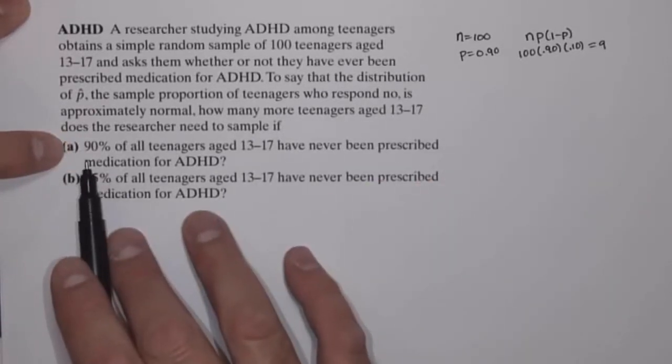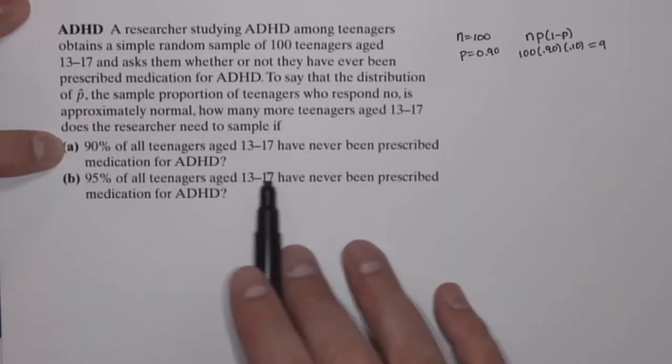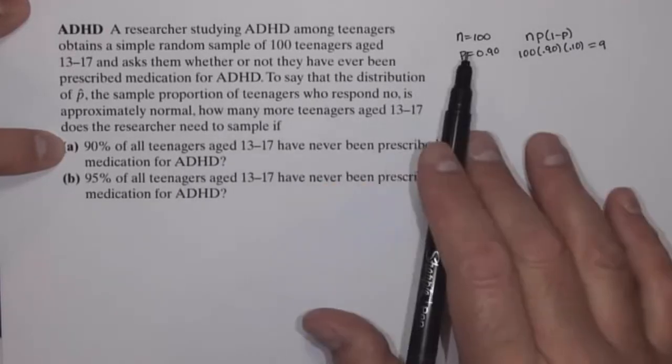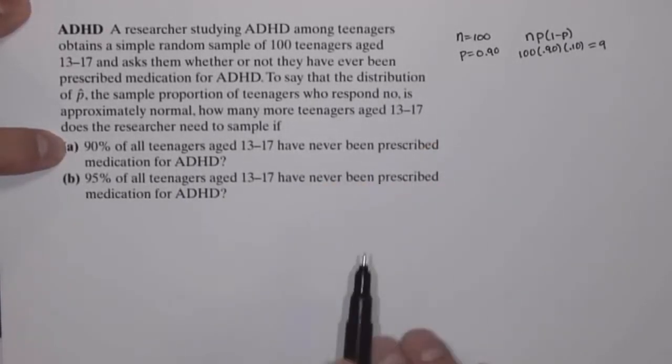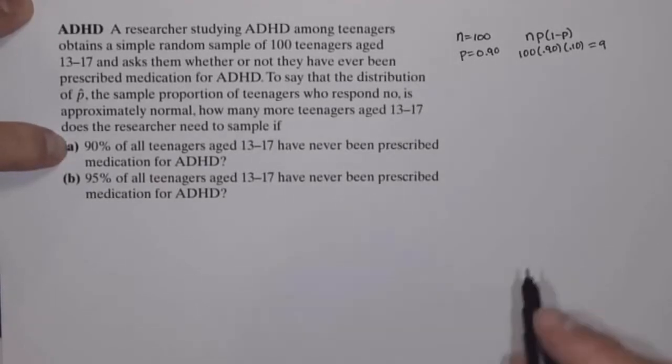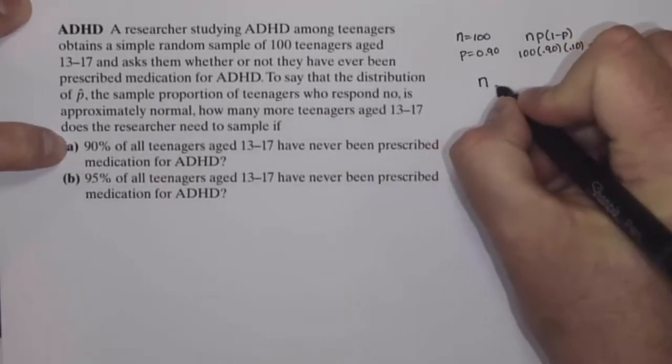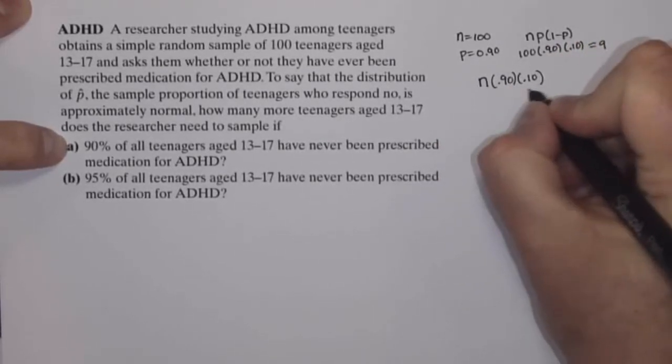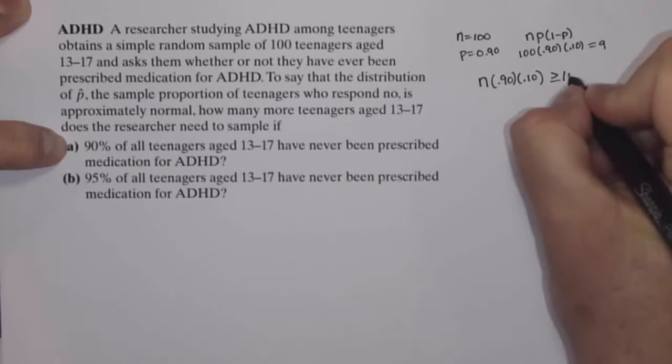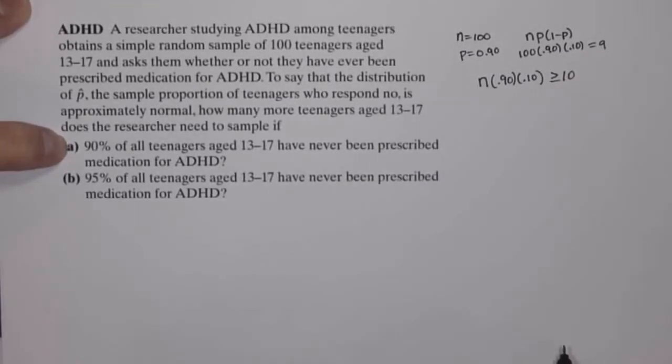So our question is: what would the sample size need to be? How many more would we have to add to the 100 so that we could say the sampling distribution of p-hat is normal? In other words, if I take n times 0.90 times (1 minus 0.90), what would n have to be in order for that to be 10 or bigger?